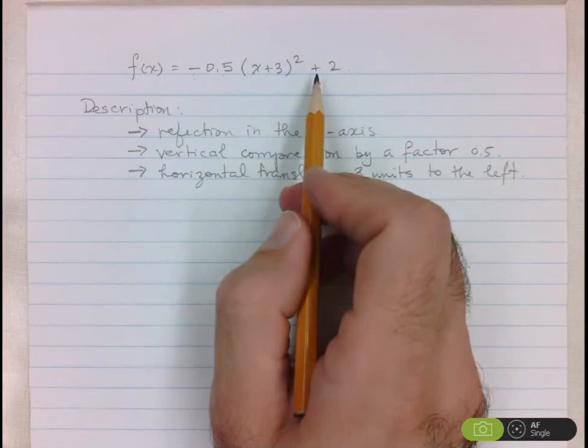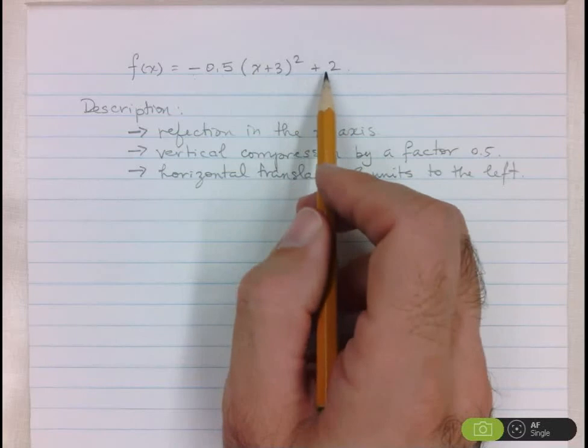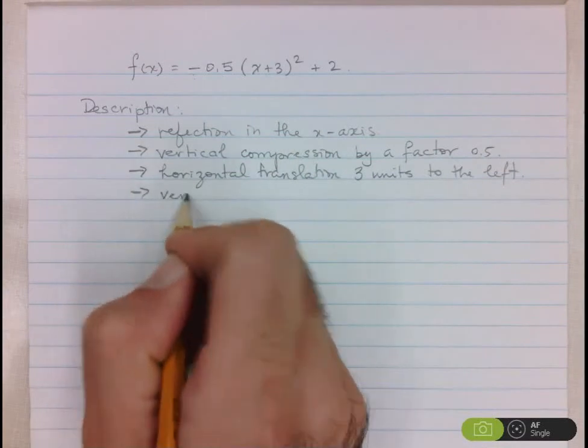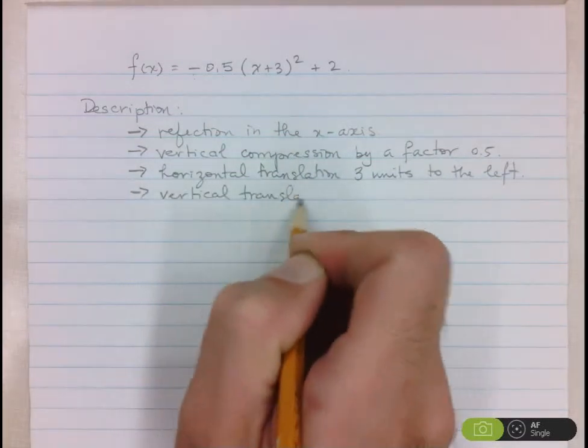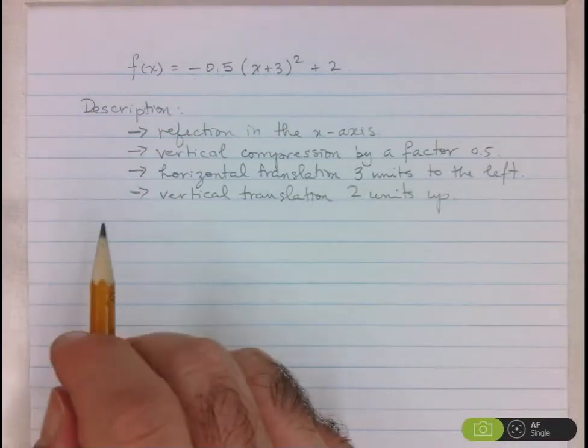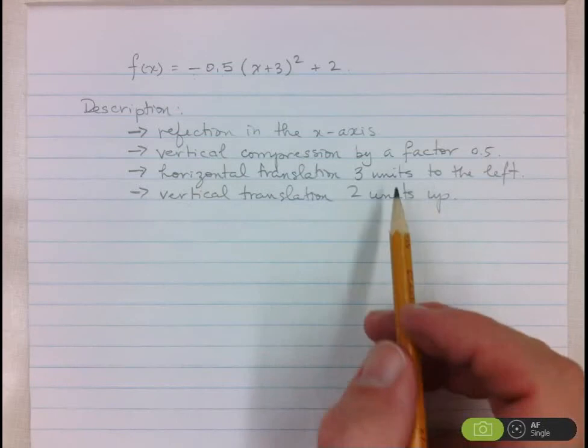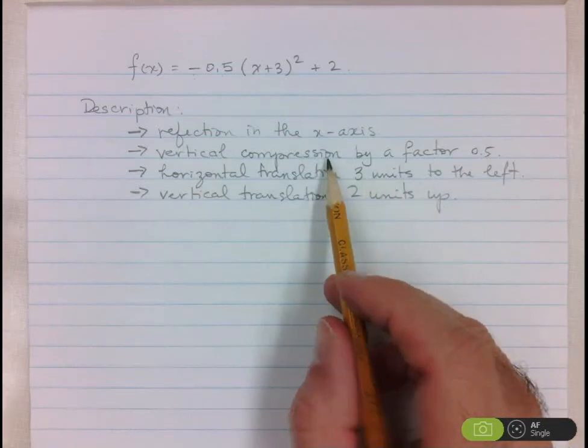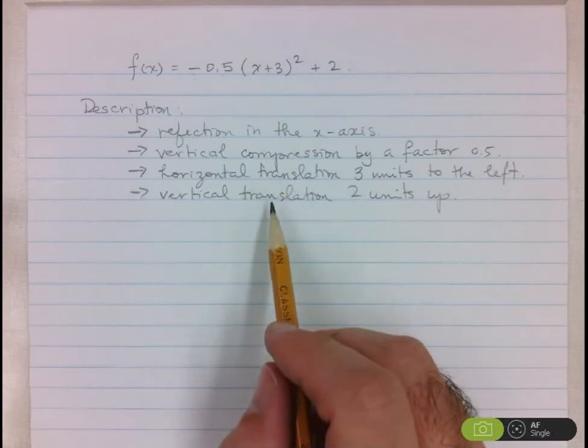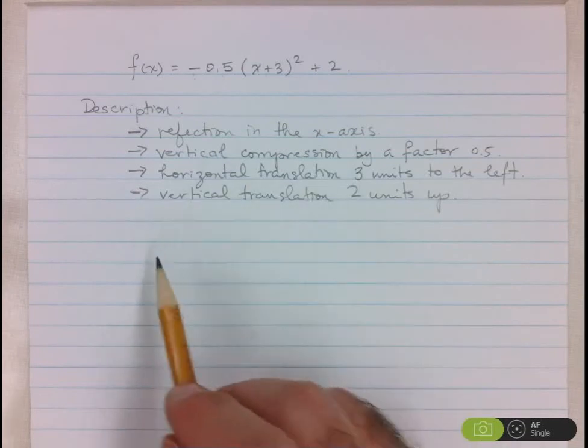And lastly, we can do this other additive one. When we add 2 after squaring, it means we're adding 2 to all the y values. So this is going to be a shift upwards by 2 units. So this is a vertical translation 2 units up. Now if they're asking you to describe the transformations, I want you to describe them in the correct order. I want you to tell me what the transformation does. And I want you to be specific. So if it's a compression or an expansion, I want you to tell me what you're multiplying the y values by. If it's a horizontal or vertical translation, I want you to tell me how many units it's moving up or down, left or right by. This is a very common communication question in a test.